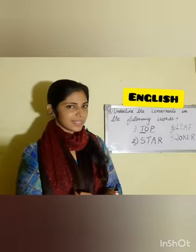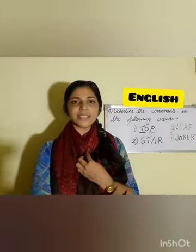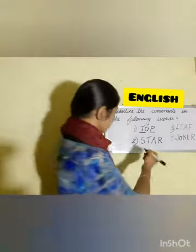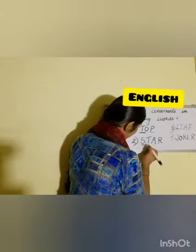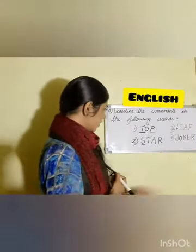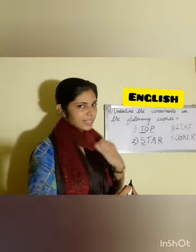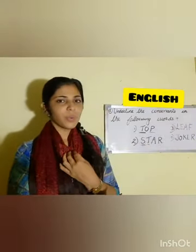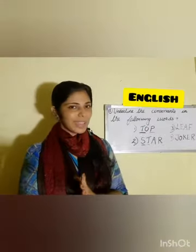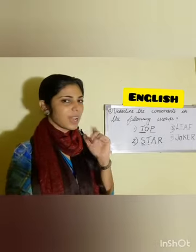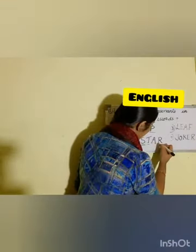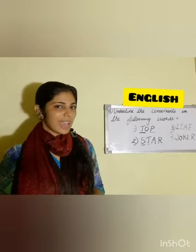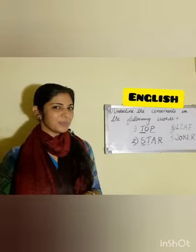Next word is start: S-T-A-R, start. Our first letter is S — S is a consonant, so just underline the letter S. The next letter T is also a consonant, so underline that letter too. The next letter is A — A is a vowel, so we don't want to do anything there. Next letter is R — R is also a consonant, so we want to underline this letter also.